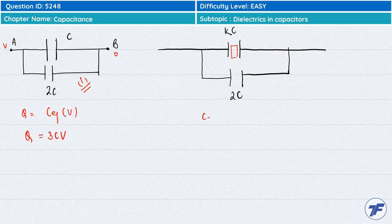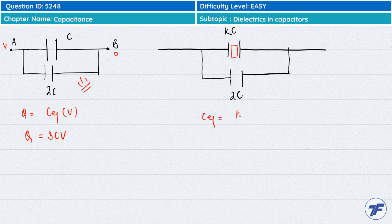So, the new C equivalent of this system is KC plus 2C, and that is K plus 2 times C.